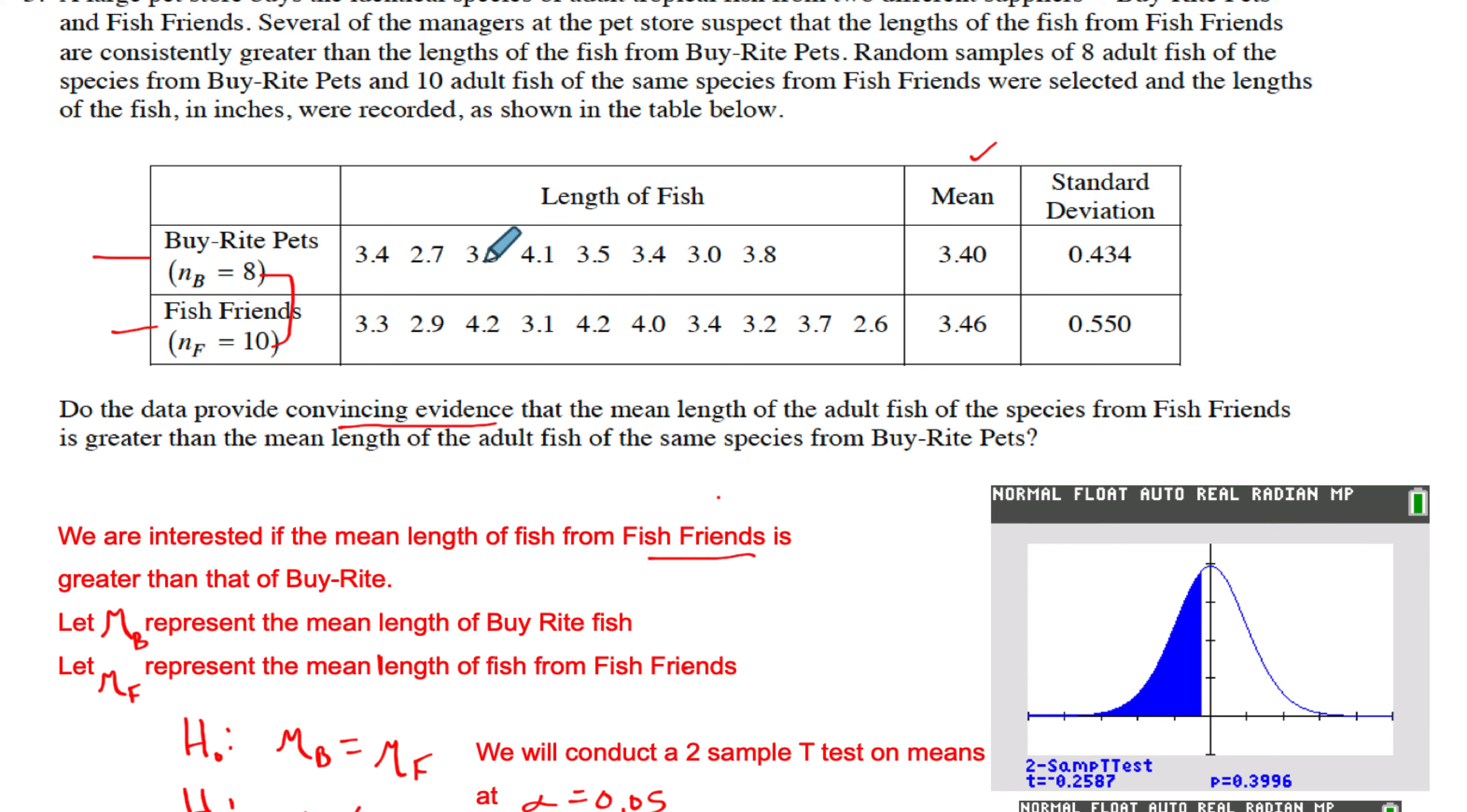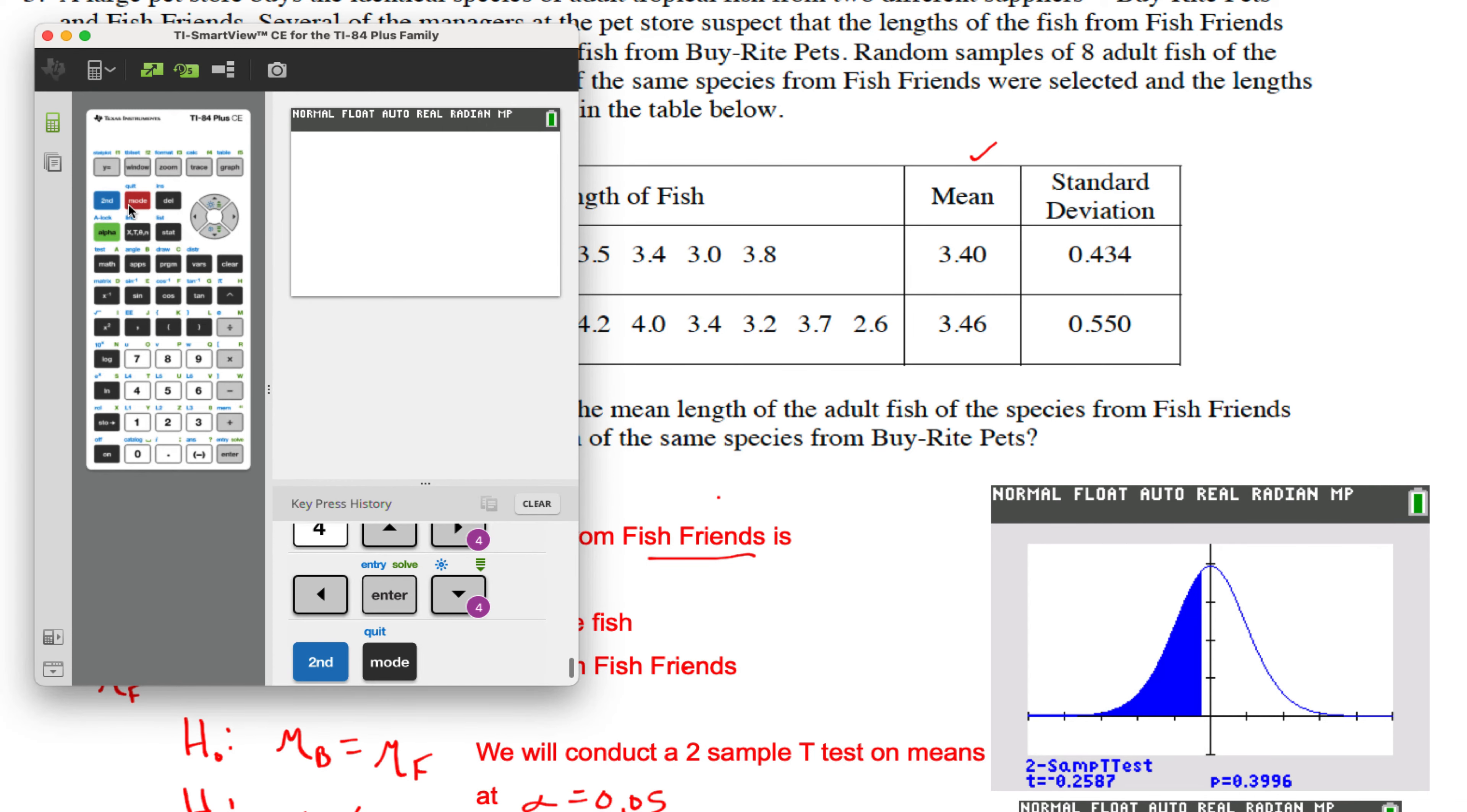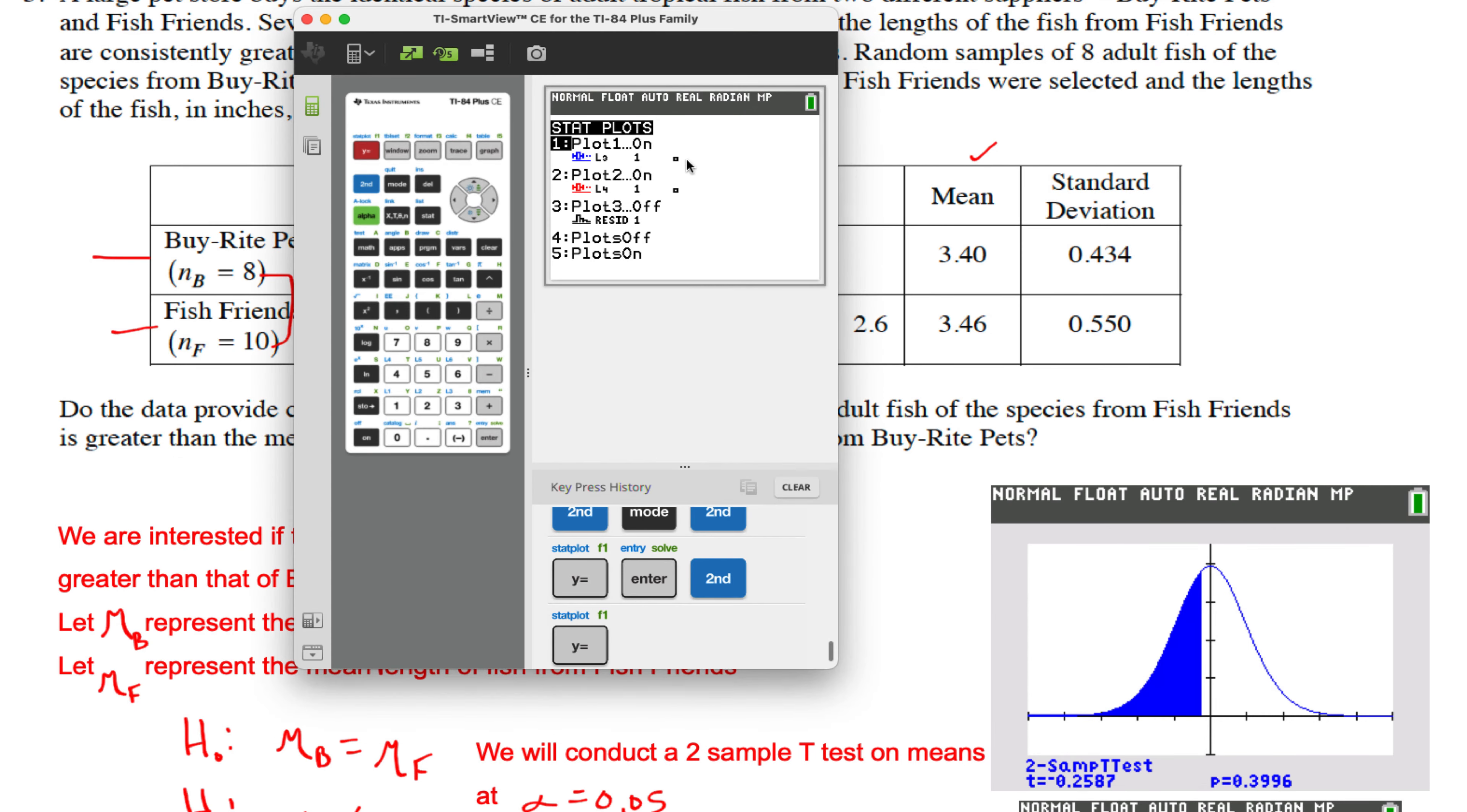Very quick, I guess I could have put these numbers in from the beginning, but the way that you set up here, let's make a box plot. You go to Y equals and you hit Enter, and then I put my numbers in L3 and L4. Choose modified box plot because that'll tell you if there's an outlier. You need to make one plot each for Buy Rite and Fish Friends. So here's Buy Rite, here's Fish Friends. Hitting Zoom 9 will fix your window real quick.